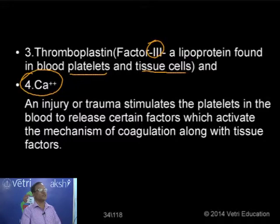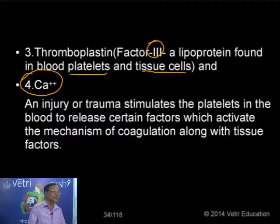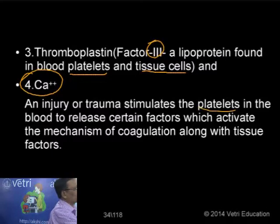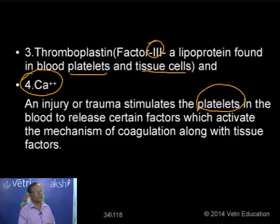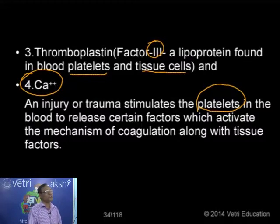Calcium ion acts as a main cofactor for activating prothrombin and is involved in forming the enzyme that converts one substance to another during clotting. At the site of injury, the injury or trauma stimulates the platelets. The first structure activated at the site of injury is the platelets. When platelets are damaged, they release certain factors which activate and initiate the mechanism of coagulation, along with the tissue factors.